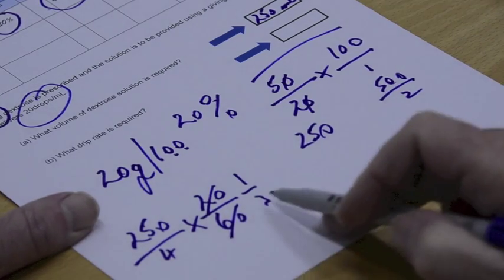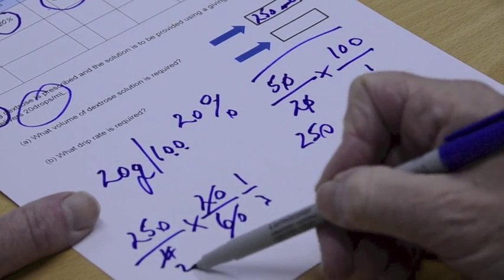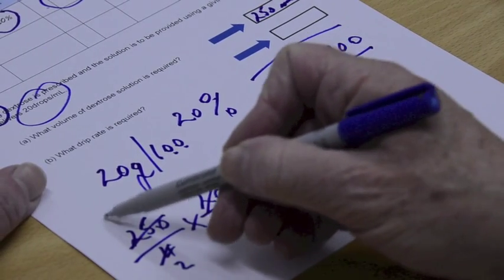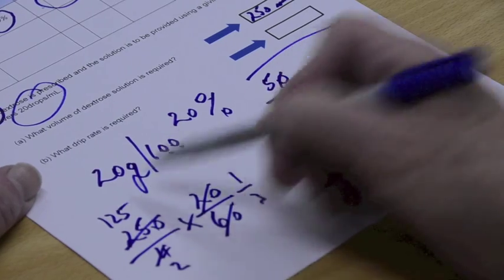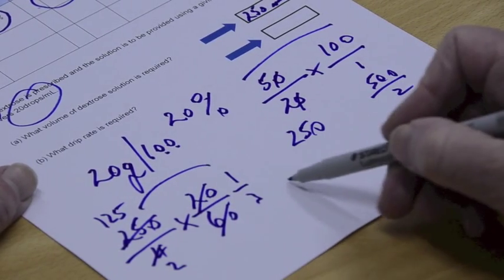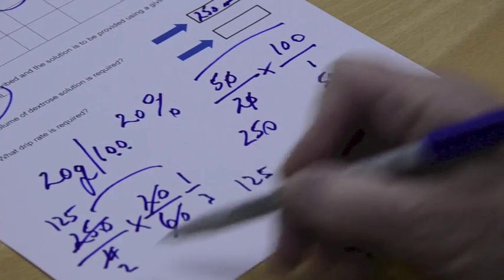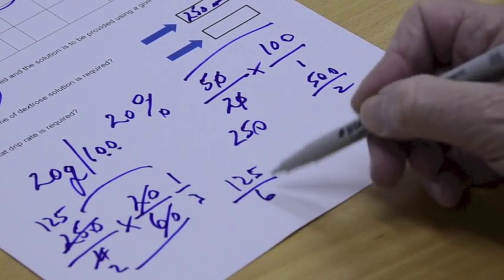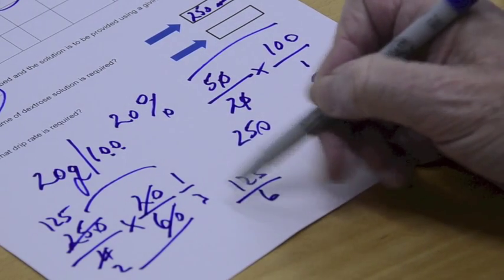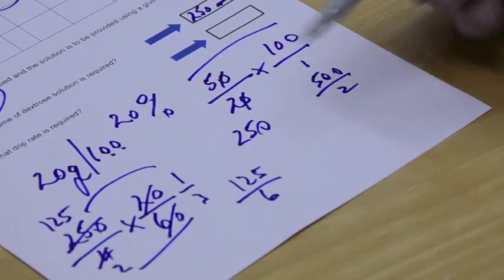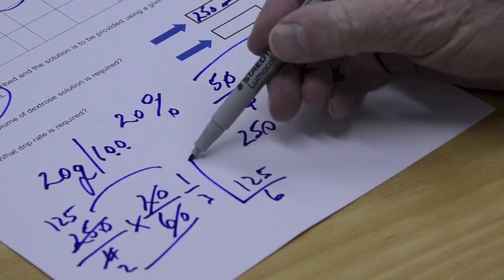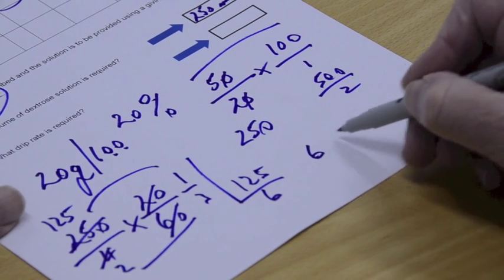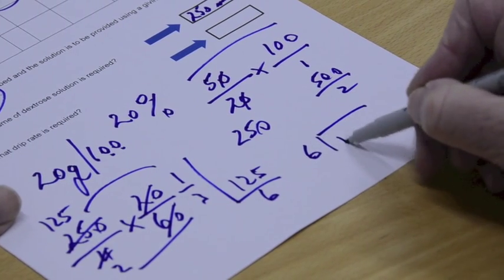But what we could do here we could cancel that down and say what's half of 4 is 2. And what's half of 250 is 125. So we multiply the top which is 125. Multiply the bottom which is 6. And we're left with this division again. If you don't like the idea of arrows going up you can always turn around the paper slightly and put a line up there and say 6 is on the outside and 125 is on the inside.